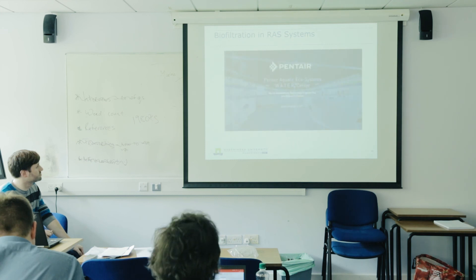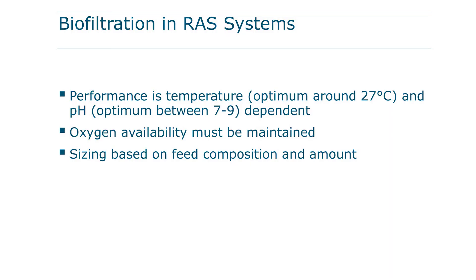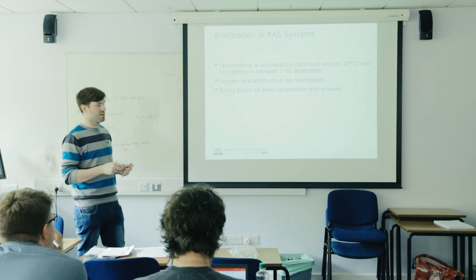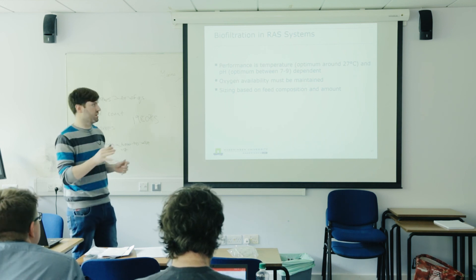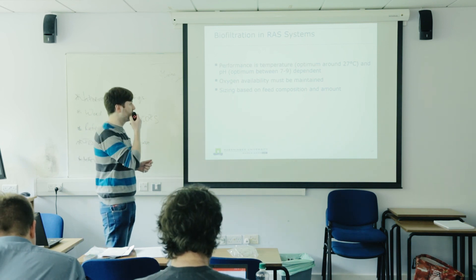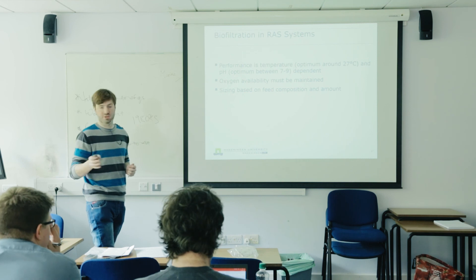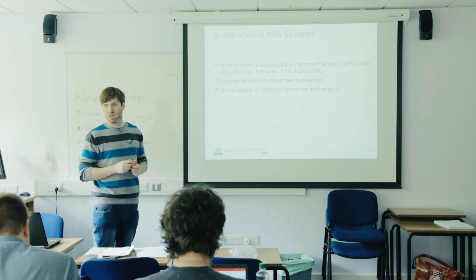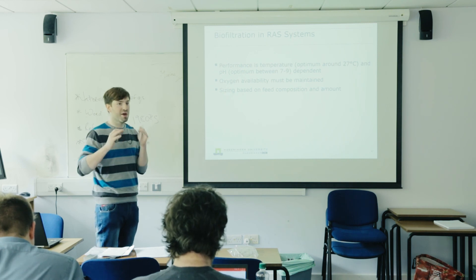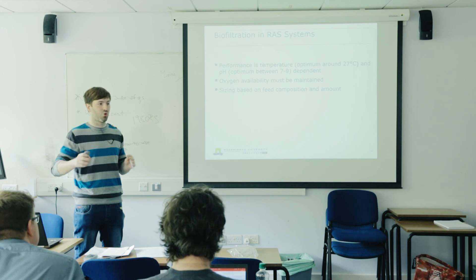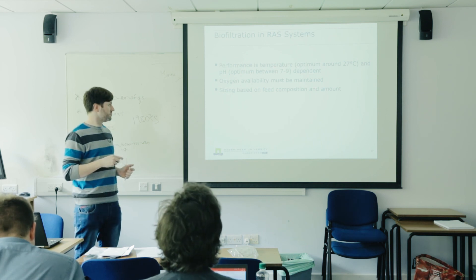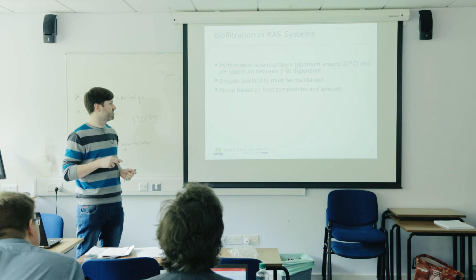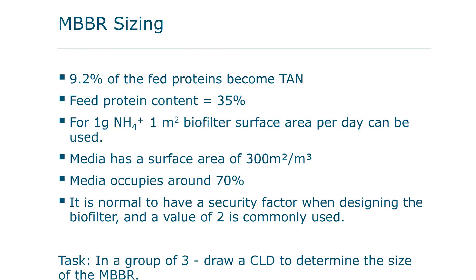What you're going to do is size the biofiltration — the MBBR. For optimal performance, the temperature should be around 27–29 degrees Celsius, though 20 degrees is also fine with slightly lower efficiency. The pH optimum is between 7 and 8. We don't take that into consideration for the simplified model, but if you make the CLD you can of course write in those dependencies and leave them out of the model later. Oxygen should always be maintained. The sizing is based on feed composition and amount.